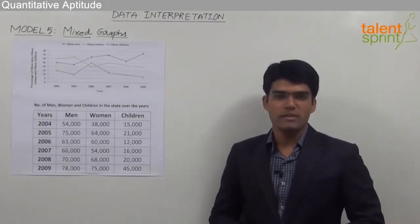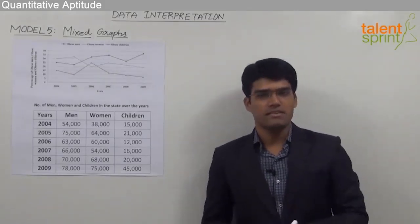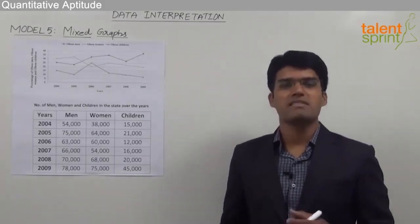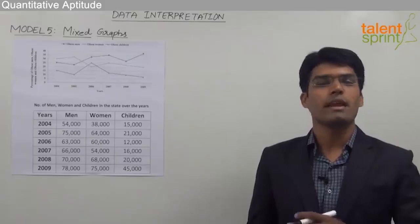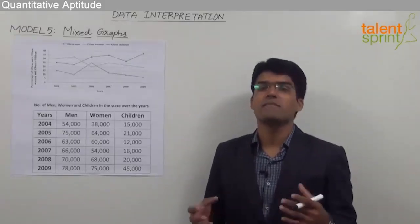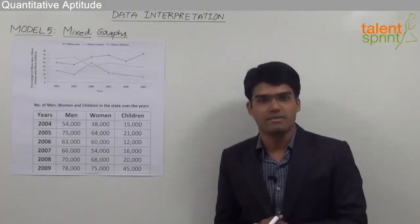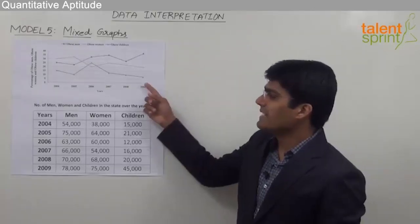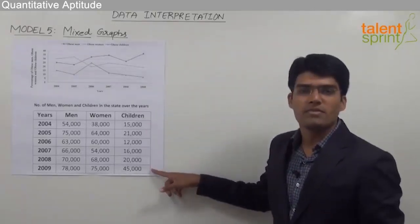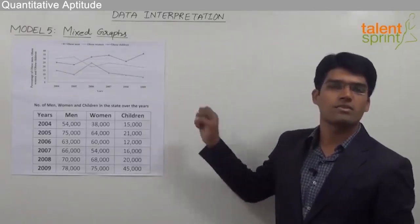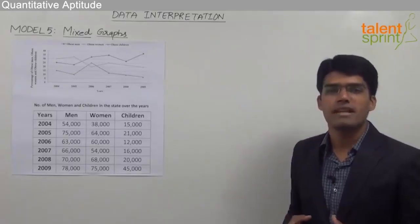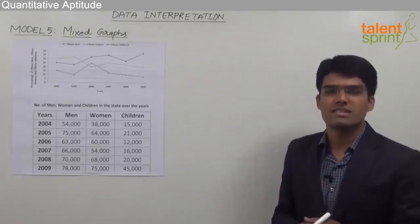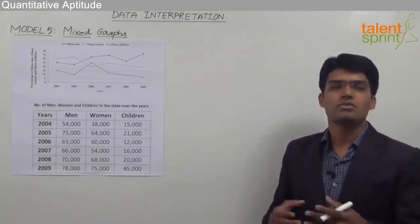Let us now take the last variety of data interpretation, i.e., mixed graphs. As I have mentioned earlier, a mixed graph is nothing but a combination of two or more different types of graphs. For example, here you can see we have a line graph combined with a tabular form. So this is what is called a mixed graph, where two different types of data presentations have been used together.